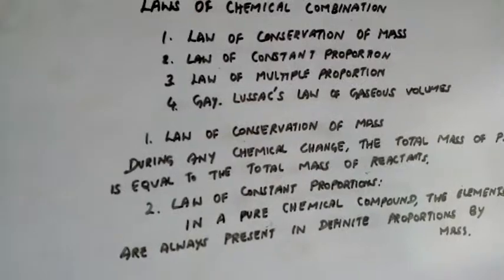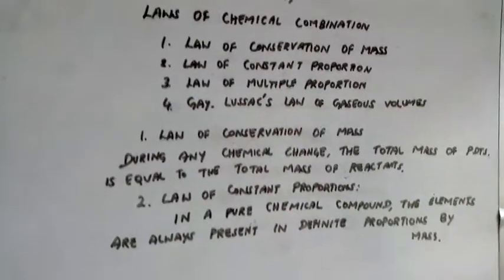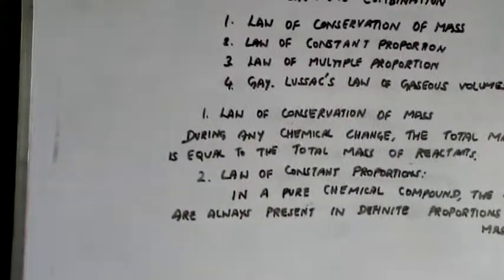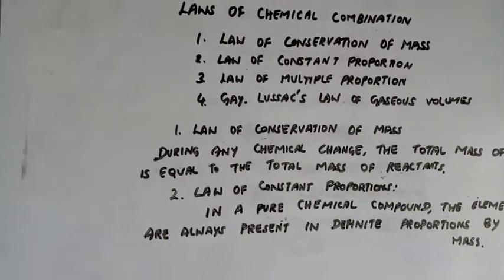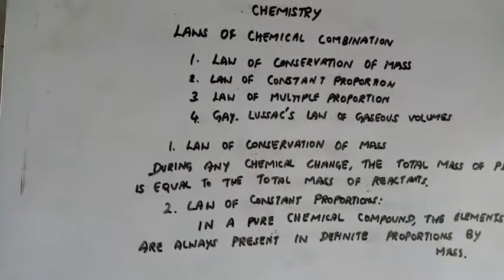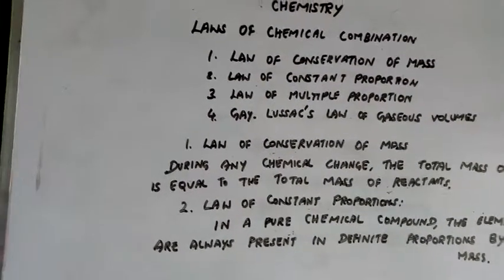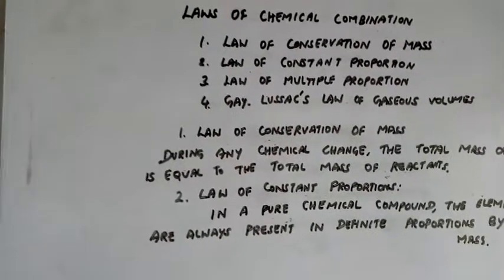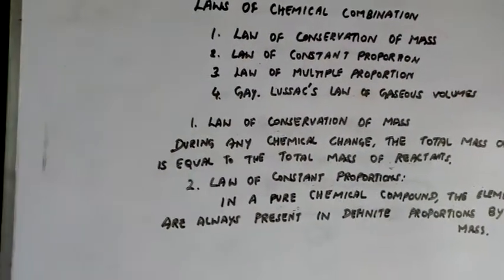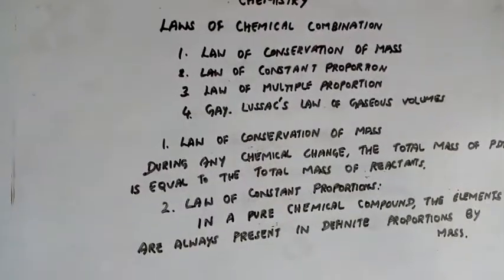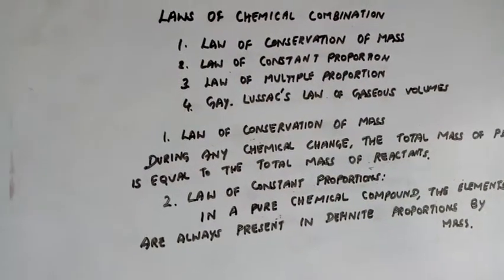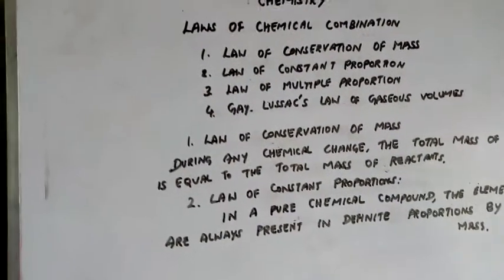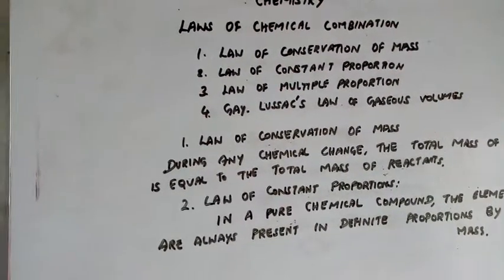The second law is the law of constant proportion. Law of constant proportion means that from wherever we take a compound — for example, we take water from rivers, sea, wells, or lakes — from all these sources we are getting water. If it is a pure chemical compound, it always contains the same elements — hydrogen and oxygen — in the same fixed proportion by weight.